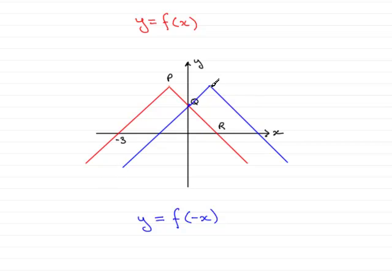So that is the graph now of y equals f of minus x. I'll just remove the red graph then, and that's what you should have - a reflection of the original graph in the y-axis. And that brings us to the end of this part.